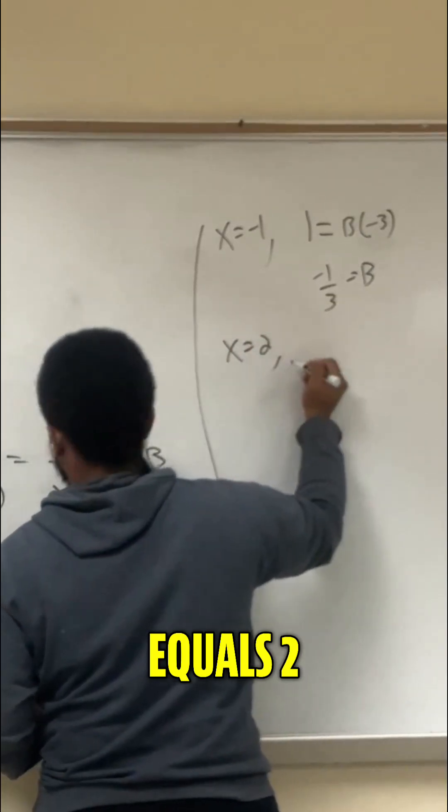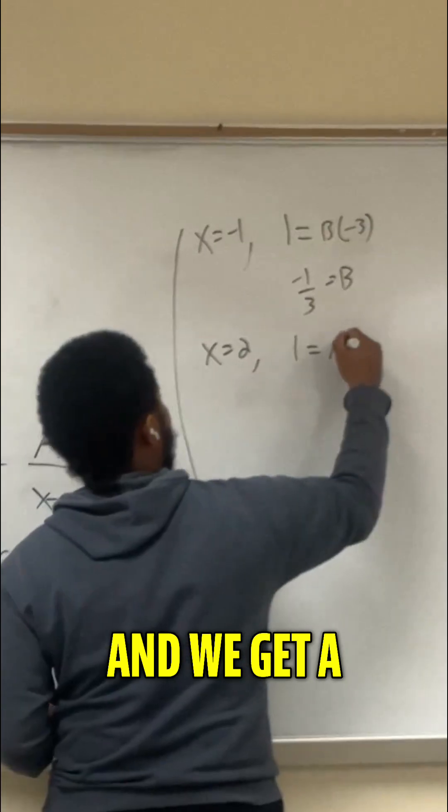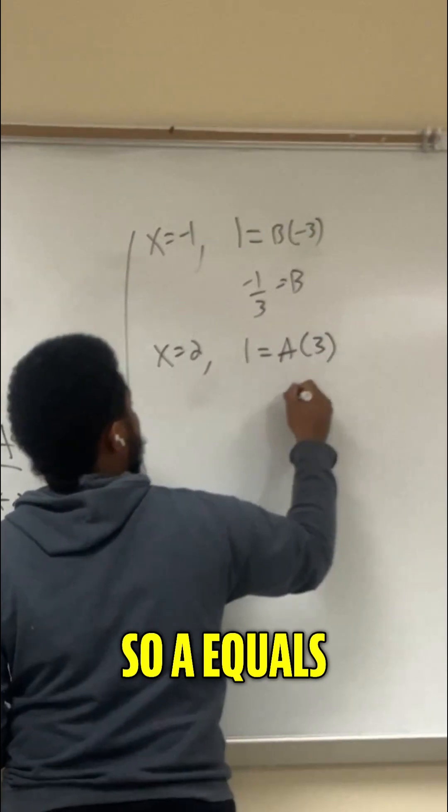And then when x equals 2, we get 1 equals, the b term goes away, and we get a times 3. So a equals positive 1 third.